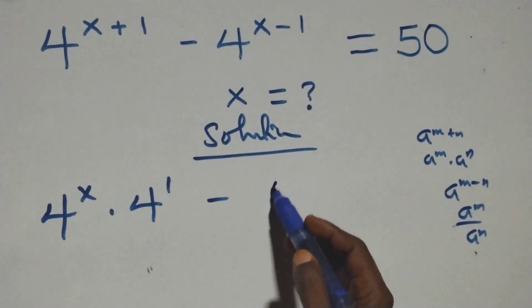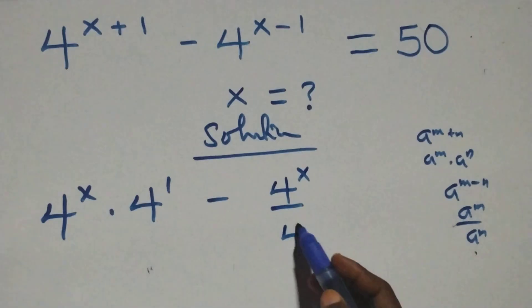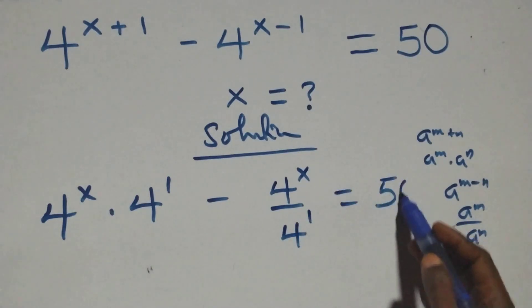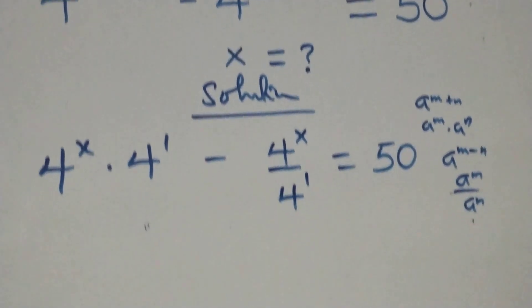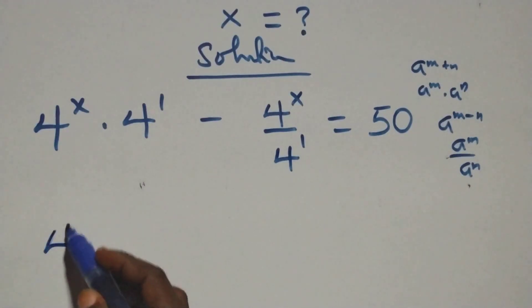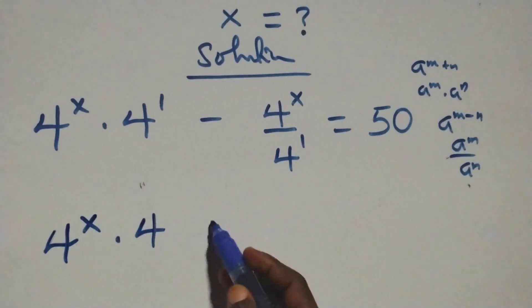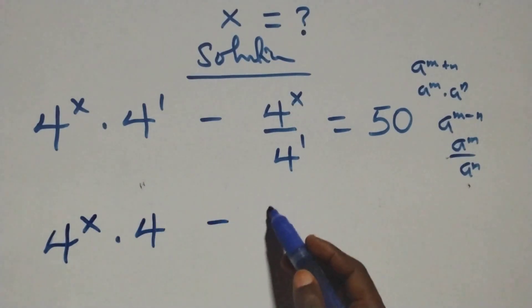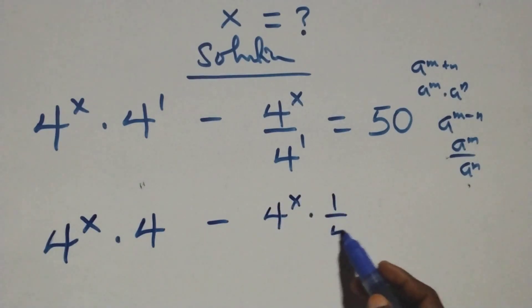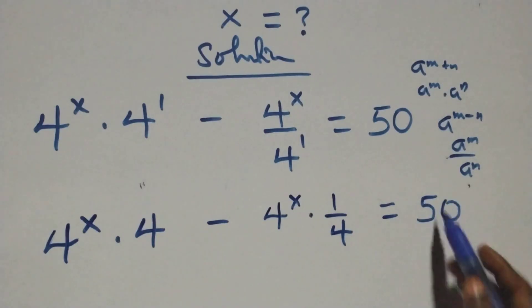At this here we have 4 raised to power x over 4 raised to power 1 equals 50. So we have 4 raised to power x times 4 raised to power 1 is 4, minus 4 raised to power x times 1 over 4, equals 50 on this side.